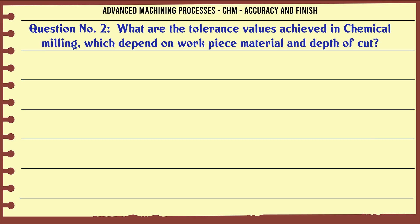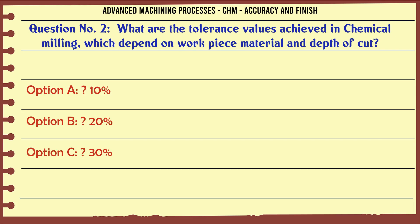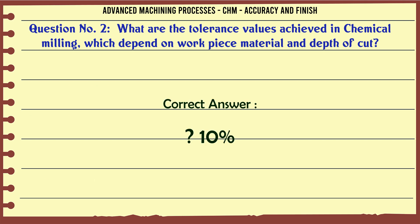What are the tolerance values achieved in chemical milling which depend on workpiece material and depth of cut? A. 10. B. 20. C. 30. D. 40. The correct answer is 10.